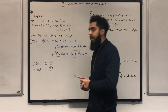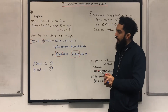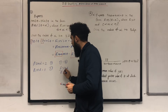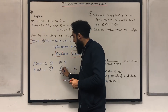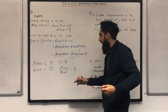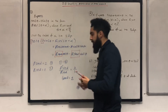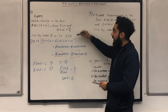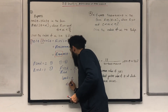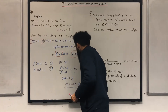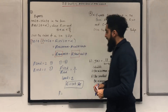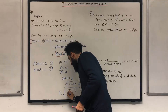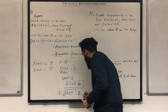Dividing equation 1 by equation 2: R sinα over R cosα = 2 over 1. The R's cancel, giving tanα = 2. Using a calculator in radian mode, α = tan⁻¹(2) = 1.107 to 3 decimal places. For R, take the square root of 1² + 2², giving R = √5.